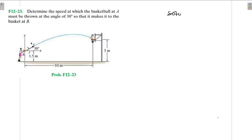Alright, solution. So we have been asked to determine the speed at which the basketball at A must be thrown — we've been asked to find va. So before we go directly into the calculations, let me briefly talk about the equations that we are going to consider for this particular problem. I've talked about those equations in my previous videos.